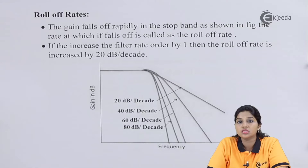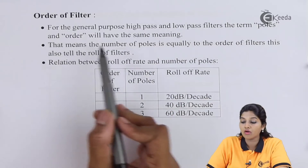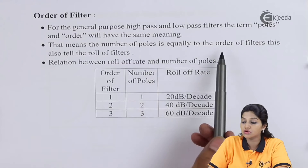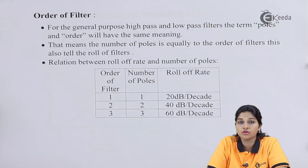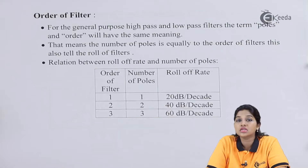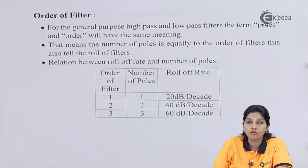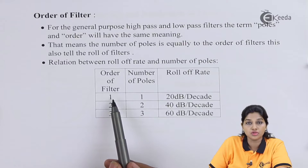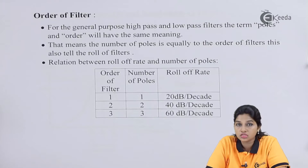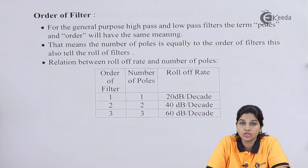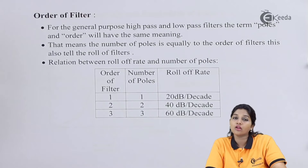The next characteristic is the order of the filter. For general-purpose high pass and low pass filters, the terms poles and order have the same meaning — the number of poles equals the order of the filter. If the number of poles is 1, the order is 1 and the roll-off rate is 20 dB per decade. If the pole count increases by 1, the order increases by 1 and the roll-off rate increases by 20 dB per decade, giving 40 dB per decade for a second-order filter.